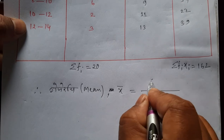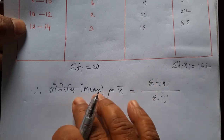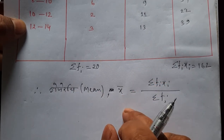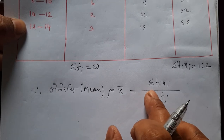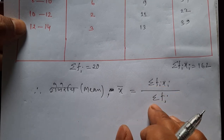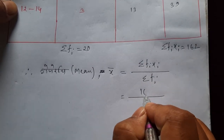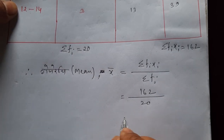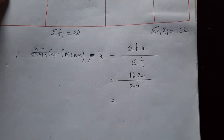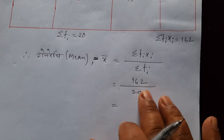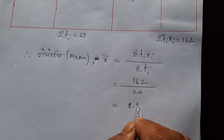Using the direct method, the formula is: x-bar equals sigma(fi·xi) divided by sigma(fi). Summation of fi·xi is 162, and summation of fi is 20. So 162 divided by 20 gives the answer 8.1.